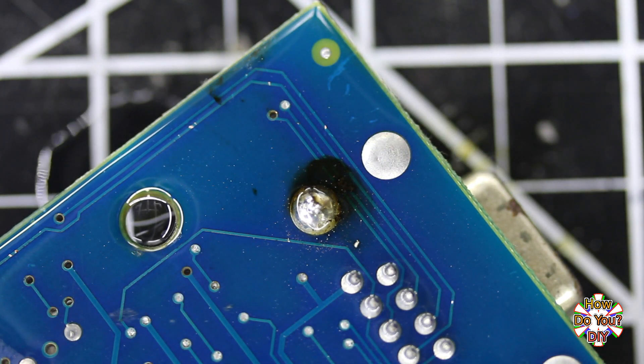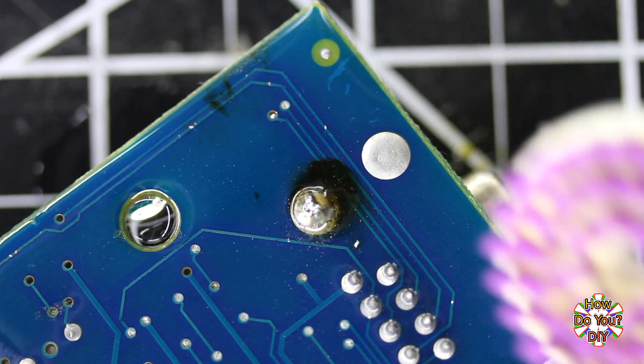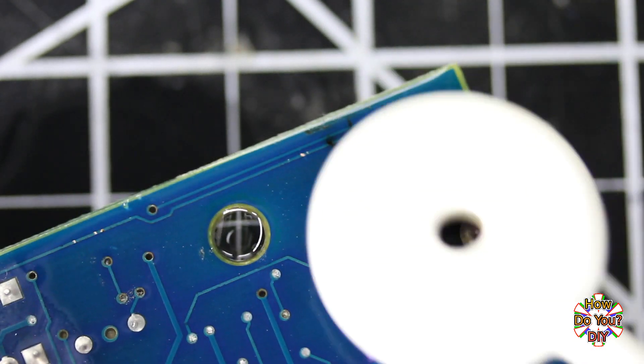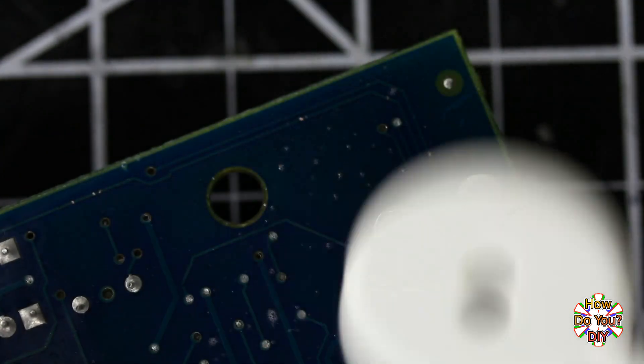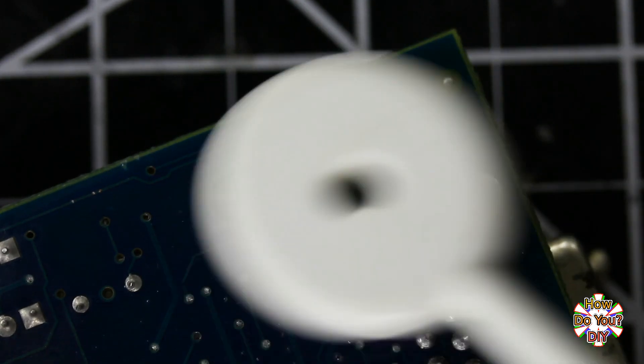You can use isopropyl alcohol to scrub it off. I'm using a little scrub brush with it, but a cotton swab would also work. That's it for now.